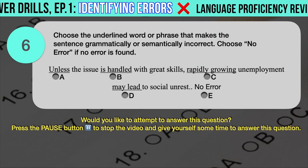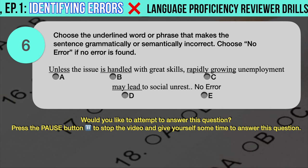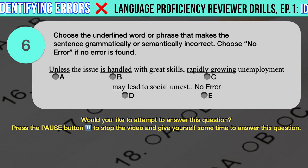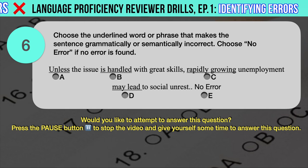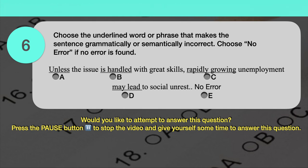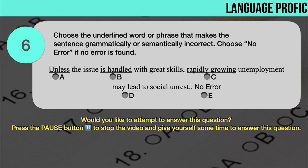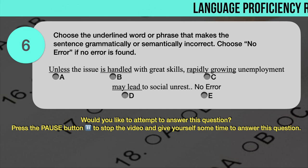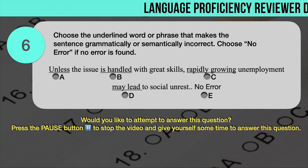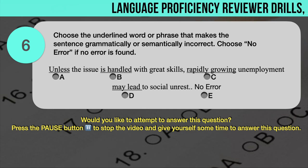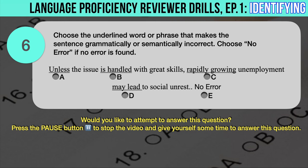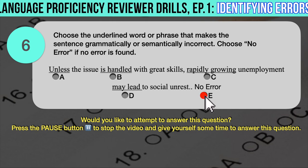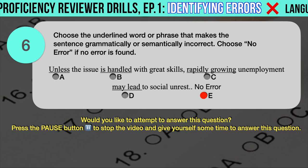Drill question number 6. Choose the underlined word or phrase that makes the sentence grammatically or semantically incorrect. 'Unless the issue is handled with great skills, rapidly growing unemployment may lead to social unrest.' The underlined words are: A. Unless, B. Is handled, C. Rapidly growing, D. May lead. The correct answer is E — there appears to be no error in the given sentence.